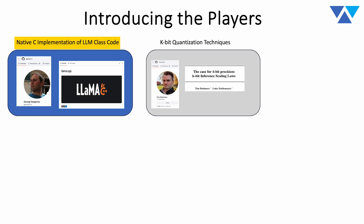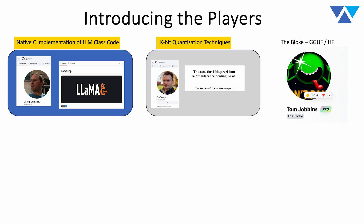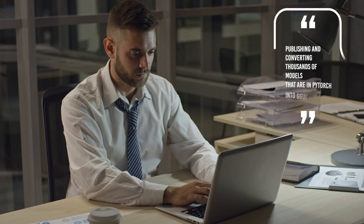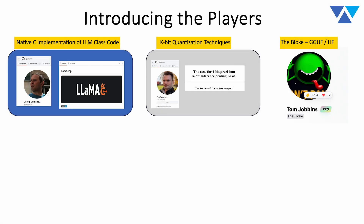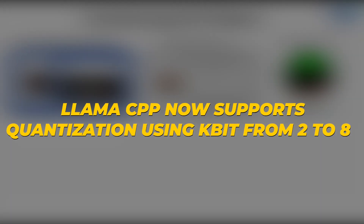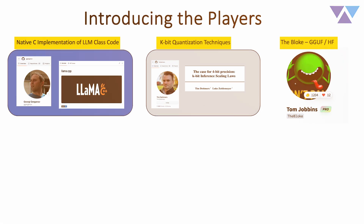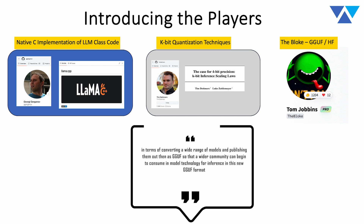Some major pioneering technology has been the work that Tim Dettmers has been doing around kbit quantization — a lot of it rolled out in 2023, with 4-bit implementations coming over the last few months. And then there's 'The Bloke,' who has been pioneering in the Hugging Face community, publishing and converting thousands of models from PyTorch into GGUF format. GGUF format just came out at the end of August, and all three of these technologies are closely related: llama.cpp provides the underlying model class code, now supporting quantization using kbit from 2 to 8 bits.